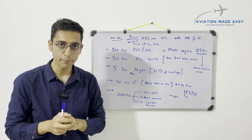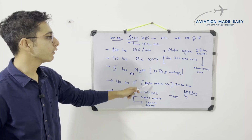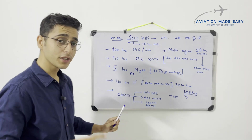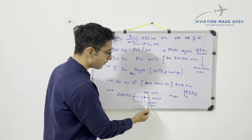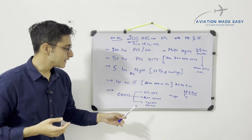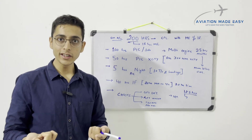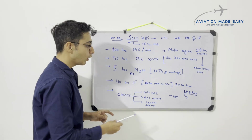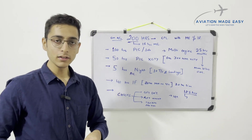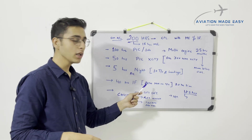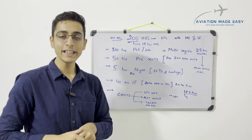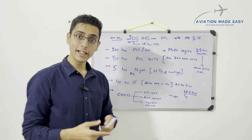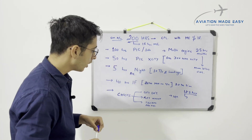Once all requirements are completed, the next step is checks taken by a DGCA-approved examiner. For your CPL you must complete a general flying test by day, a general flying test by night including a 120 nautical mile night cross-country, a 250 nautical mile day cross-country, and an instrument rating test to get your IR endorsed on your CPL.